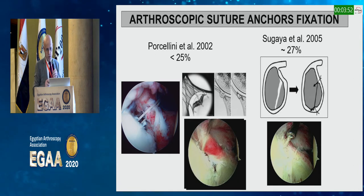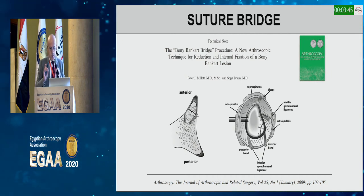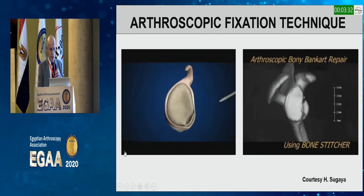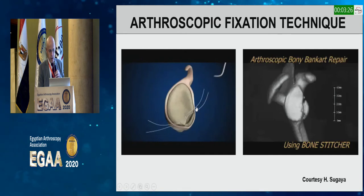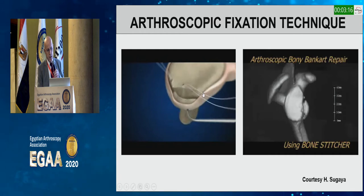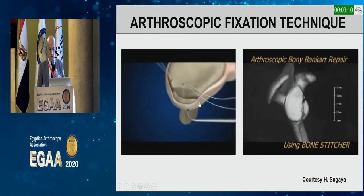There are other techniques such as the bony Bankart bridge procedure, using resorbable pins to reduce and compress the bone fragment. The bone stitcher, developed by Hirose, can also be used. You place your anchor, pull up the labrum, obtain reduction, and stabilize the system. The bone stitcher is passed through the fragment and the suture is retrieved and compressed down.